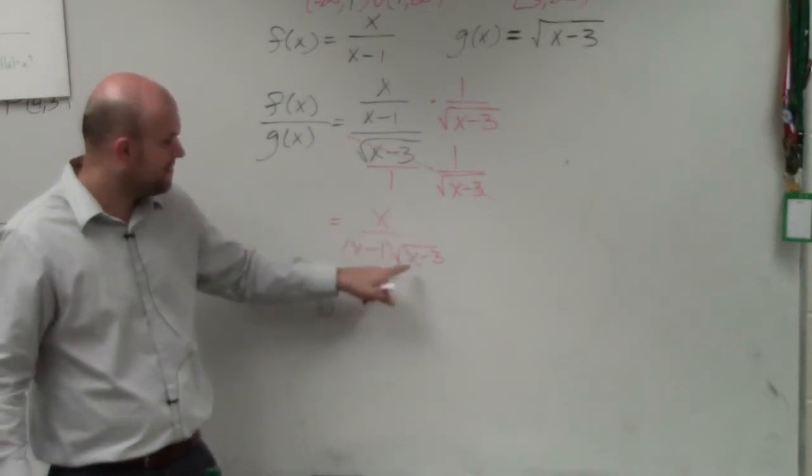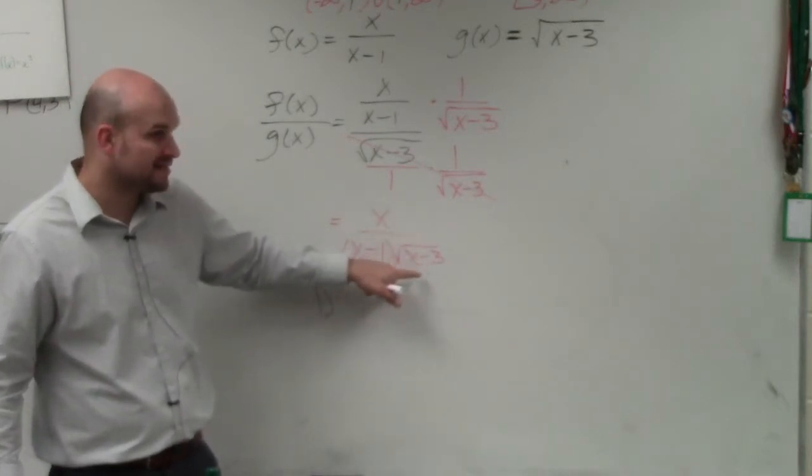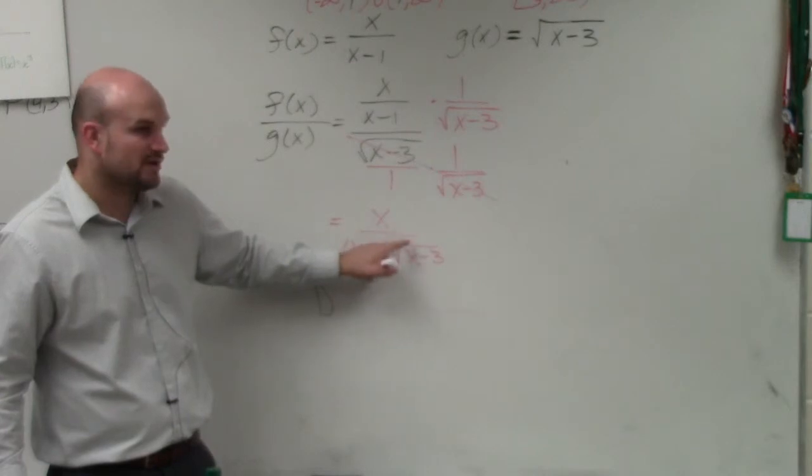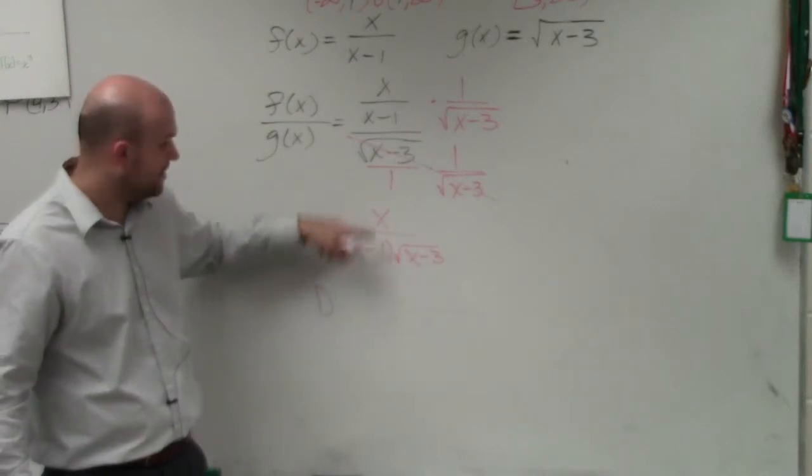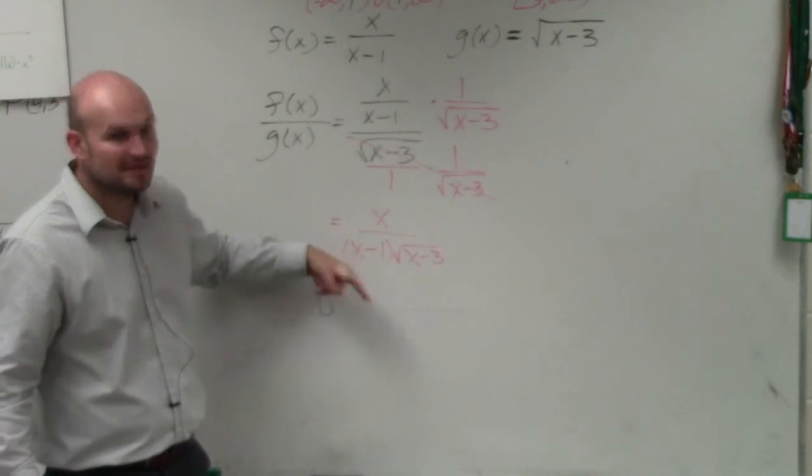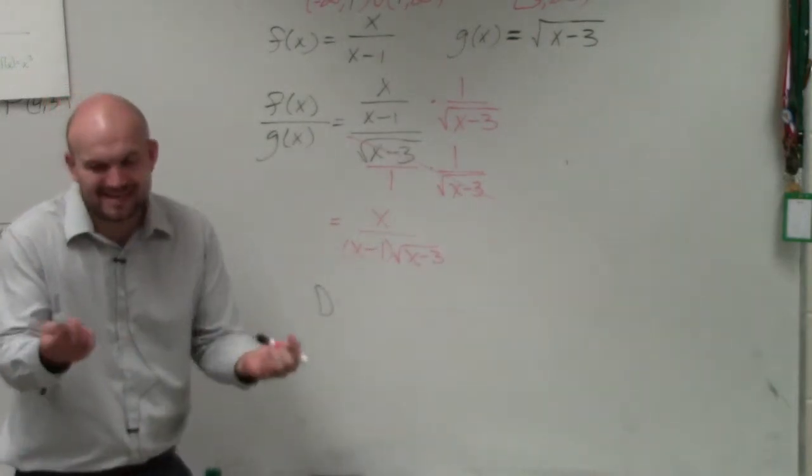No, because, well, actually, sorry. So if you put a 3 in here, 3 minus 3 is 0. Square root of 0 is 0. 0 times anything is 0. x divided by 0 is undefined. Well, you just can't divide by 0, right?